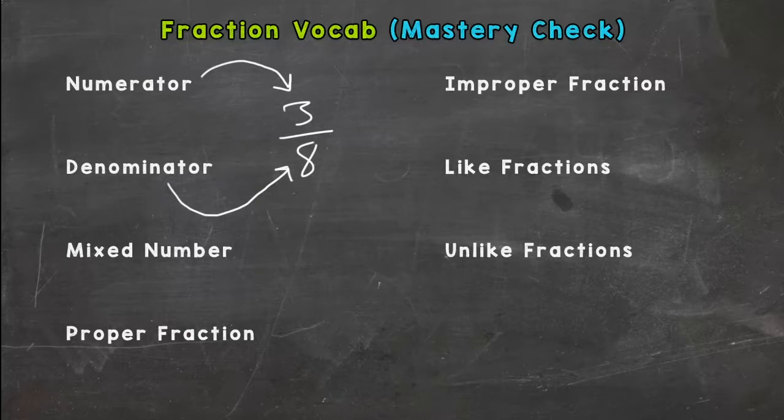A mixed number means you have a whole number and a fraction. So ten and three tenths, one and a half. Okay, those are all mixed numbers.